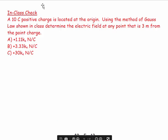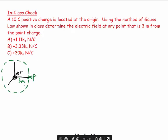Here's a typical problem: a 10 Coulomb charge is located at the origin. Let's draw an origin with a positive 10 Coulomb charge. Using the method of Gauss's law shown in class, determine the field at any point that is 3 meters from the point charge. I'll place my point of interest P at 3 meters away. I need a Gaussian surface which goes through point P and has all the advantages of symmetry, so I'll pick a spherical Gaussian surface.